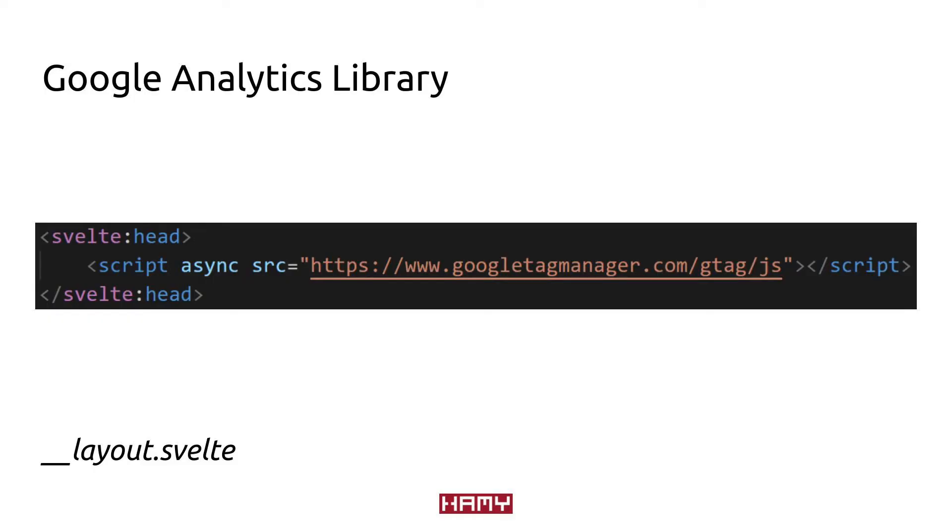Now that Google knows how to aggregate our data, we actually need to send it to them. The first step is to download that Google library into our website. To accomplish this, we're going to use the layout.svelte file, which works as a template for every page in our SvelteKit website. This is going to be useful because every page will have analytics on it. Inside of that layout file, we're going to be using the Svelte head tag, which allows us to inject code into the output HTML document's head tag, useful for downloading external libraries like the one from Google.